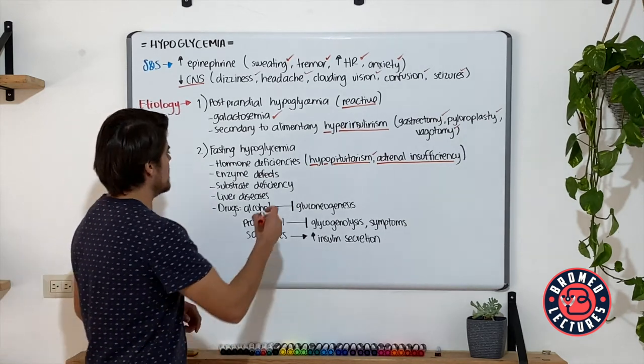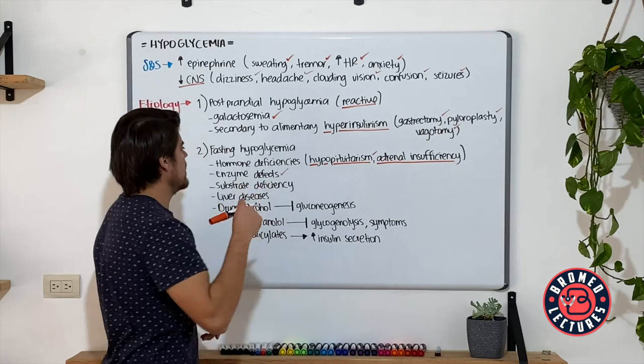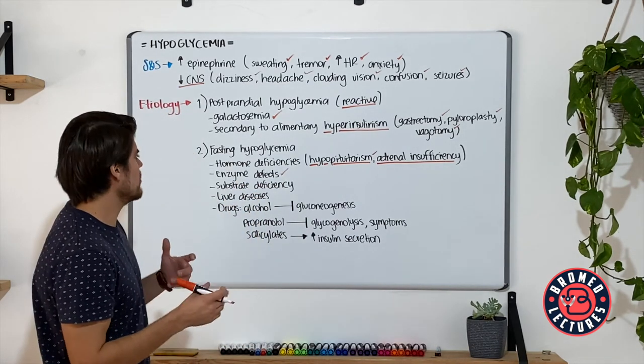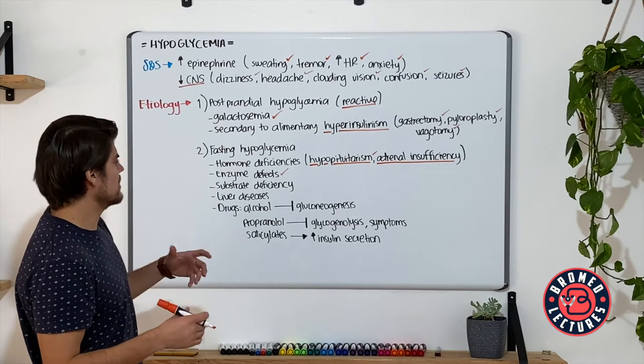Consider also enzymatic deficiencies such as Von Gierke's disease, Cori disease, McArdle disease, particularly the glucose metabolism and enzymatic defects.